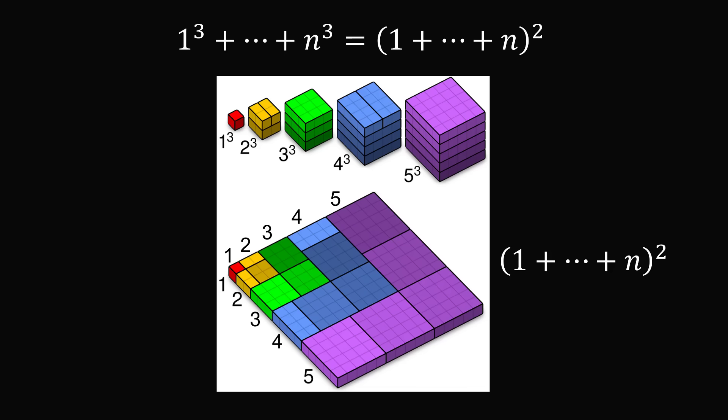So we can consider the total number of blocks in this figure will be the square of 1 + 2 + 3 + 4 + 5. And this has to exactly be the same number of blocks that's in the top, which is exactly the sum of the first n cubes. Therefore these two quantities are equal, and thus our formula is true.